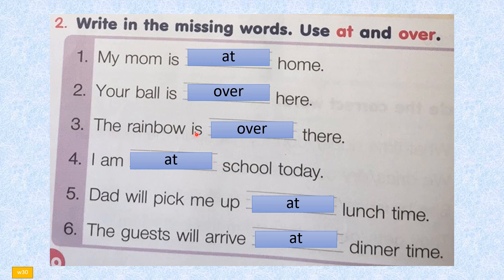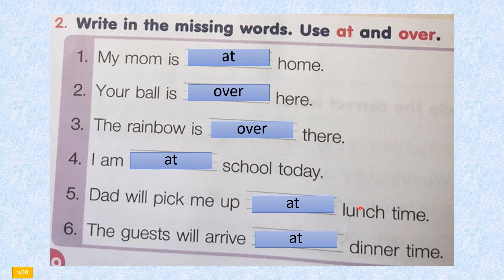Number three: the rainbow is over there. Number four: I am at school today. Number five: dad will pick me up at lunch time. Number six: the guest will arrive at dinner time.